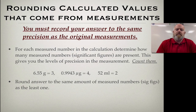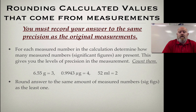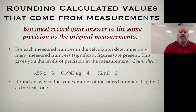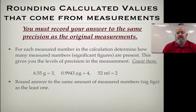In this video lesson we're going to talk about rounding calculated values that come from measurements. Whenever we measure, we always want to make sure that we measure to the precision of our instrument plus that estimate. That estimate helps reduce our error but doesn't eliminate it, so there's always some error in our measurements that we have to account for — we don't record calculated numbers more precisely than the original measurements.